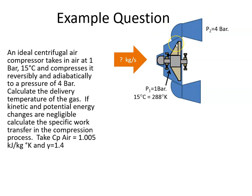So here's our compressor, and we're told that the pressure at the start is 1 bar, and the temperature is 15 degrees Celsius, which is 288 Kelvin. And we're told that the pressure at the output here is 4 bar.